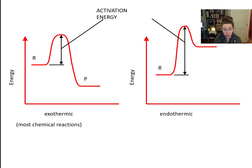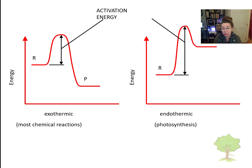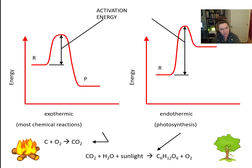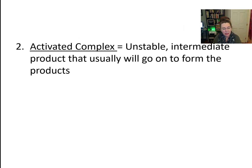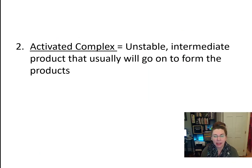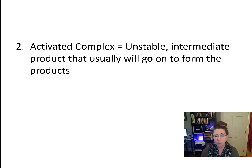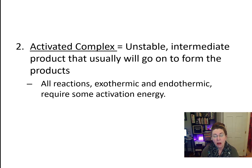Most chemical reactions are exothermic. Some are endothermic, like photosynthesis, but it's much less common. Our second term to define is the activated complex. The activated complex is an unstable intermediate product that will usually go on to form the products unless that reaction is interrupted. All reactions, whether exothermic or endothermic, do require some activation energy.